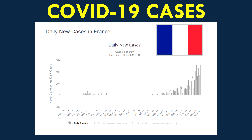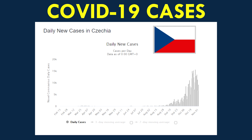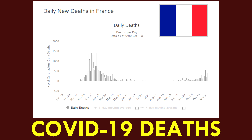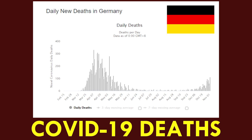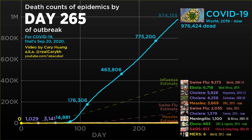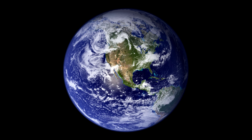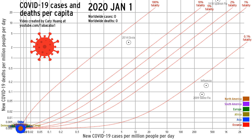As winter approaches, European nations are all experiencing a huge second wave of new COVID-19 cases. However, COVID-19 deaths are not rising quite as sharply, though they're still certainly rising. What does all this mean, and how does this pandemic look on a worldwide scale?